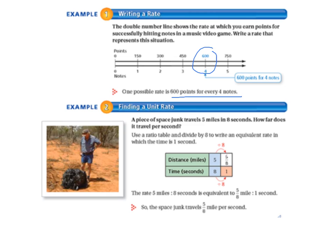Let's move on to example 2, finding a unit rate. A piece of space junk travels 5 miles in 8 seconds. How far does it travel per second? So we're going to use a ratio table and divide by 8 to write an equivalent rate in which the time is 1 second. Because with a unit rate, remember we want to have 1 in the denominator or in the bottom part of our rate.